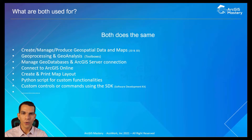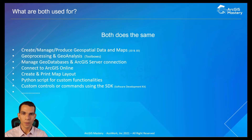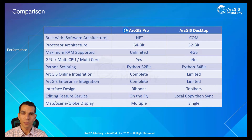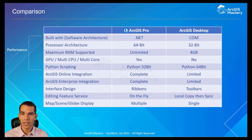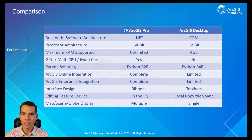If both do the exact same thing, what is the purpose of having ArcGIS Pro? The main comparison between both is performance. ArcGIS Pro was created on a modern software architecture that allows it to be much faster, give you better performance, and have better compatibility with modern and future computers.